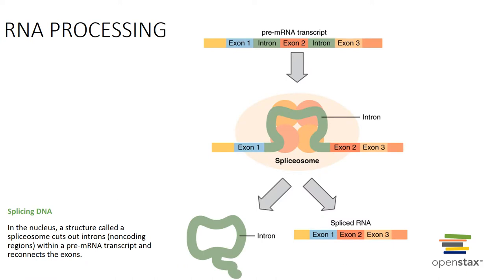We then have to process the RNA. Messenger RNA is spliced, removing the introns, which are the non-coding regions of DNA. DNA has both coding regions and non-coding regions.